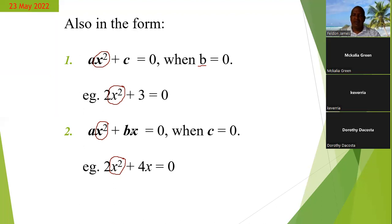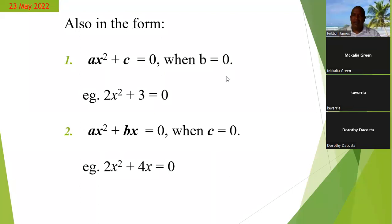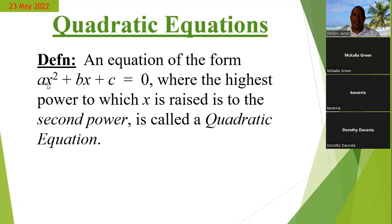The three forms will take a slightly different approach when you're solving them. You should not have a power higher than 2, and you don't always have it in the form of ax² + bx + c. It can be ax² + c, or it can be ax² + bx. So those are the three forms that you can have it in.